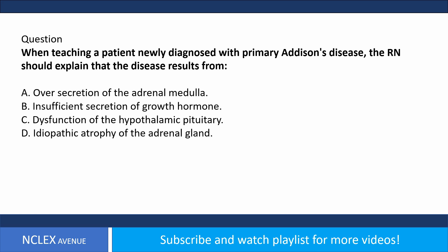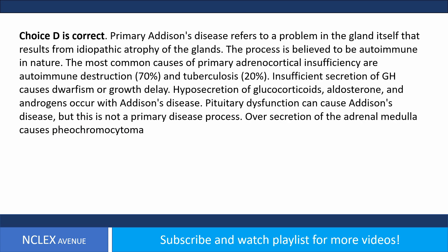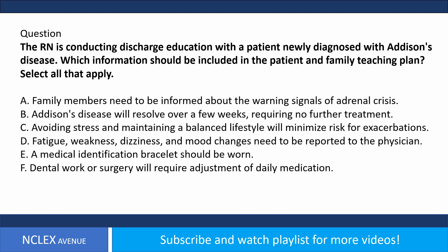Question: When teaching a patient newly diagnosed with primary Addison's disease, the nurse should explain that the disease results from: A) over-secretion of the adrenal medulla, B) insufficient secretion of growth hormone, C) dysfunction of the hypothalamic-pituitary axis, D) idiopathic atrophy of the adrenal gland. Answer choice D is correct. Primary Addison's disease results from idiopathic atrophy of the glands, believed to be autoimmune. The most common causes are autoimmune destruction (70%) and tuberculosis (20%). Over-secretion of the adrenal medulla causes pheochromocytoma.